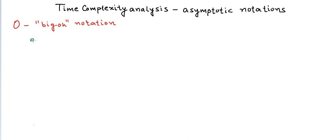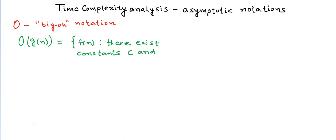If we have a non-negative function g(n) that takes a non-negative argument n, then Big O of g(n) is defined as the set of all functions f(n) for which there exist constants c and n₀ such that f(n) ≤ c·g(n) for all n ≥ n₀. It's easier to understand this using an example.